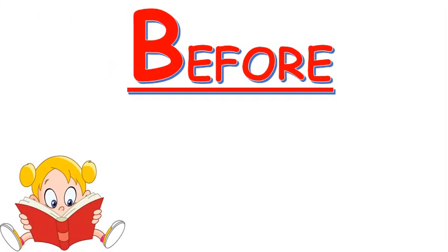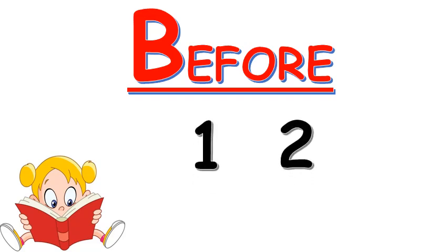Now let's learn the before concept. Here we have two numbers: one and two. Can you find which one is before two? The number which comes first is called the before number. So here, one is before two.